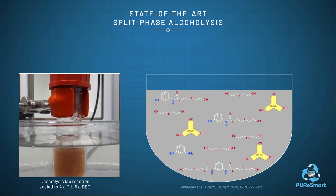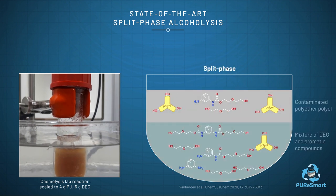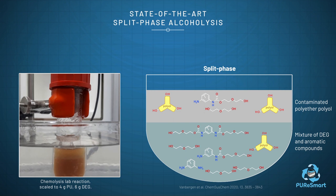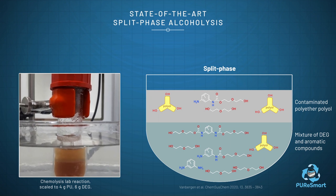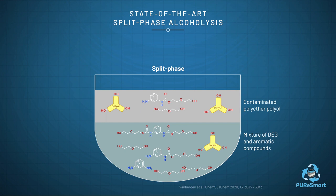After the reaction, a spontaneous phase separation occurs with the polar diethylene glycol and aromatic compounds in the lower phase and the apolar polyether polyol in the upper phase. However, the recovered polyether polyol is also contaminated with diethylene glycol and aromatic compounds, resulting in hydroxyl values upwards of 130 mg potassium hydroxide per gram. The hydroxyl value is a measure for the amount of hydrogen active groups in a polyol.